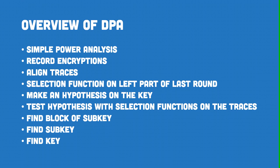What we want to do with all those traces and ciphertexts is sort them into two different sets — according to one bit of their internal state during the last round. If that bit is one, we put the trace in one set; if that bit is zero, we put it in another set. To compute that one bit, we use a function called a selection function. That selection function uses the ciphertext we have and the key — specifically six bits of the key, which we call a block of the key — and not just any key, but the last round's subkey.